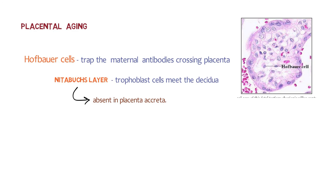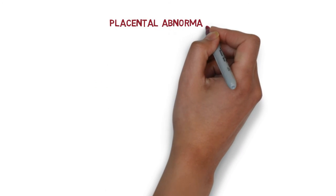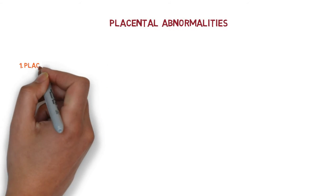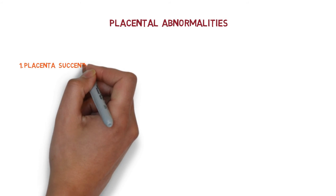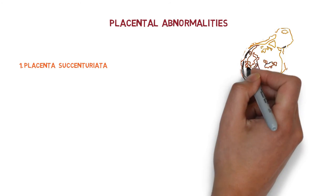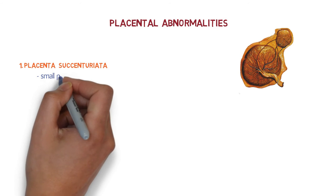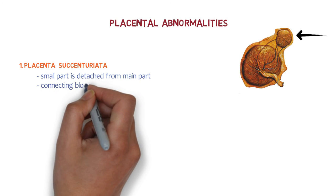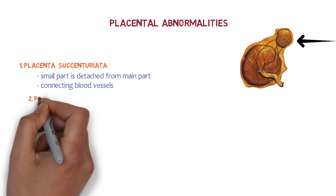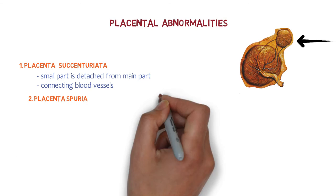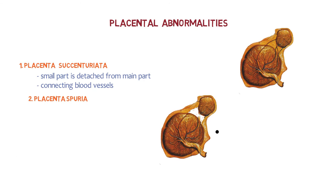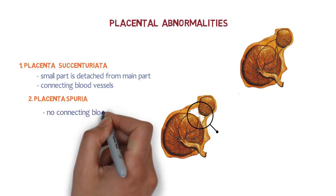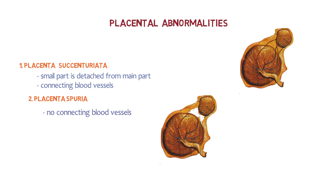Placenta succenturiata: morphologically, one or more small lobes of placenta, the size of a cotyledon, may be placed at varying distances from the main placental margin. There is one accessory lobe connected to the main lobe by communicating vessels. In cases of absence of communicating blood vessels, it is called placenta spuria. In placenta succenturiata, the small detached part is connected to the main placenta via connecting blood vessels.